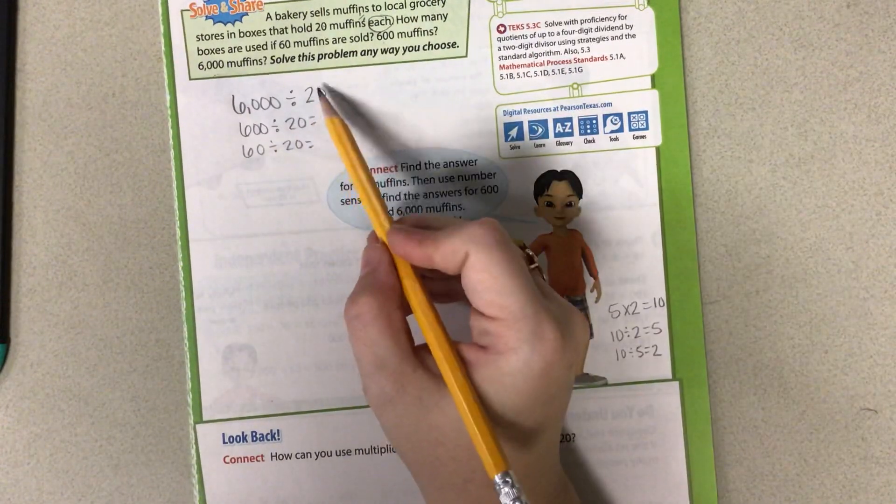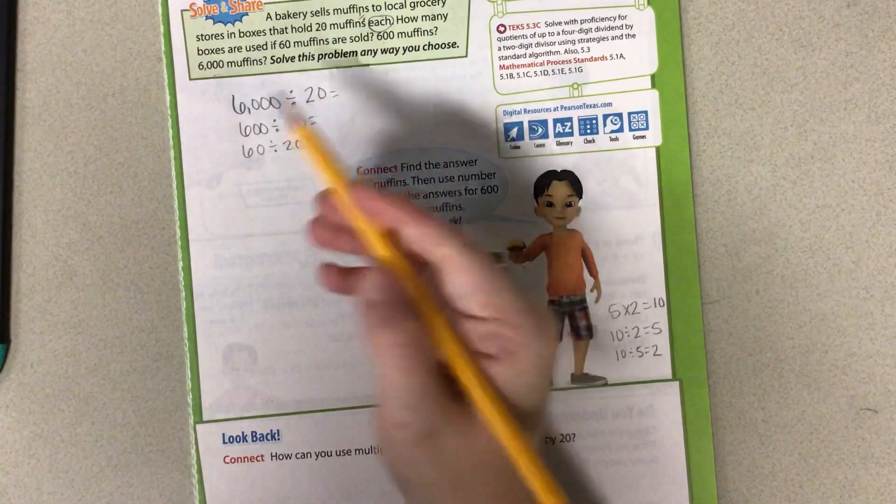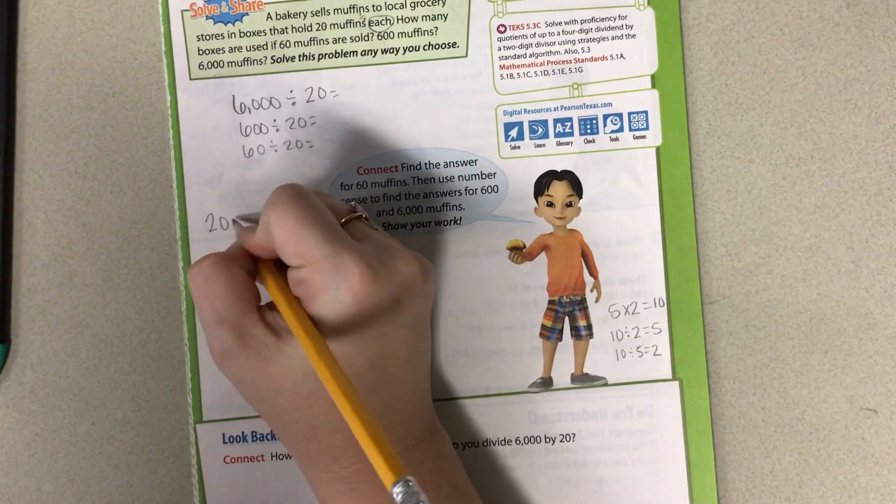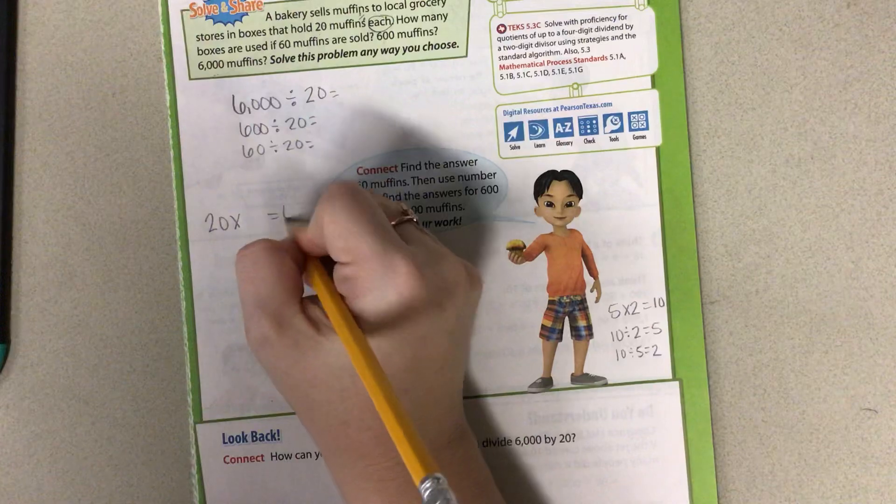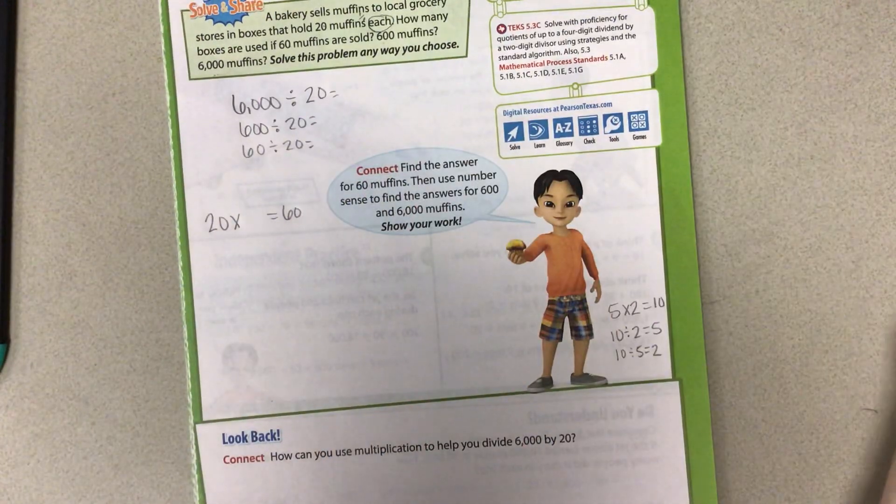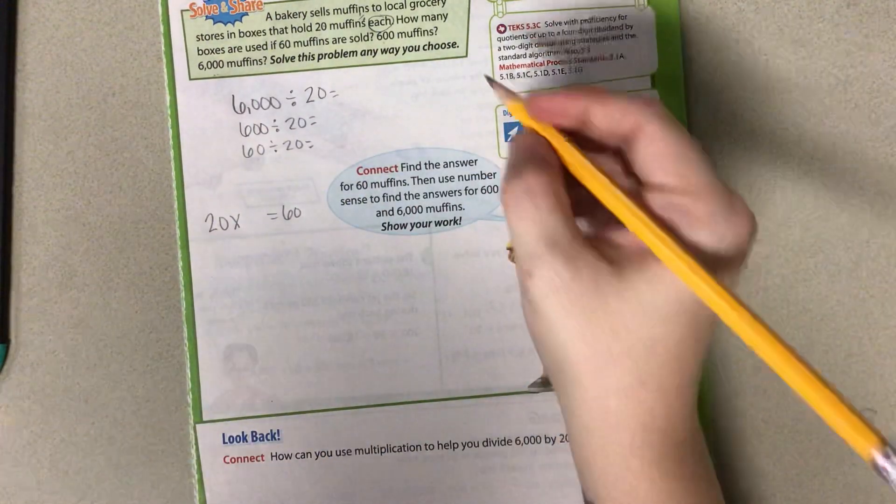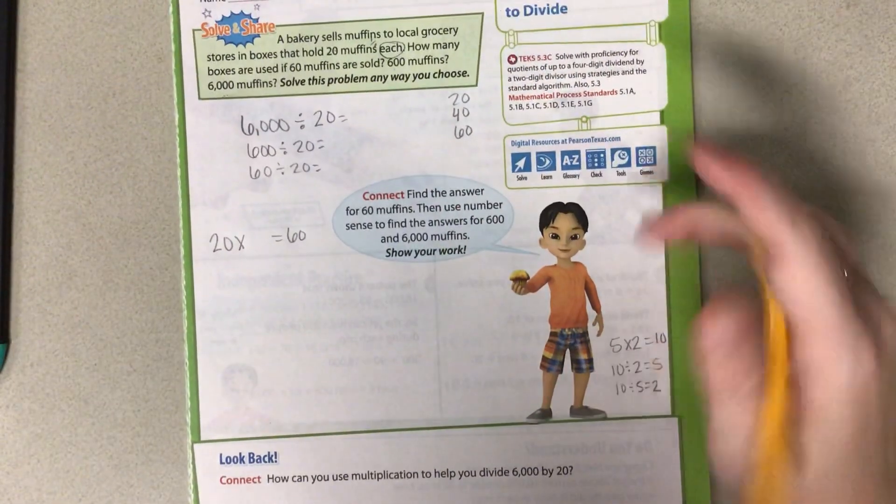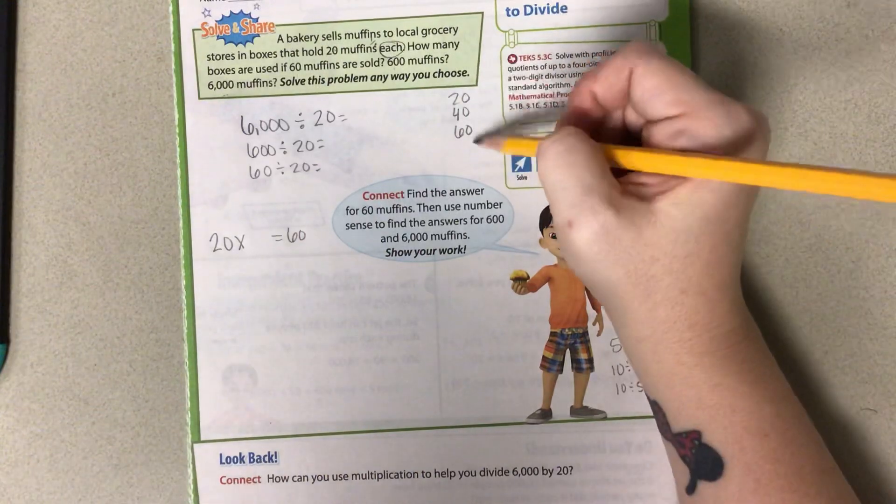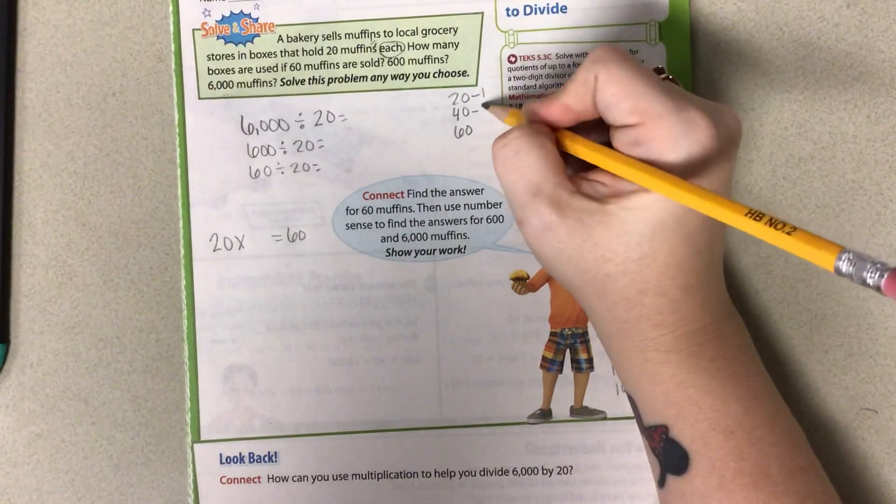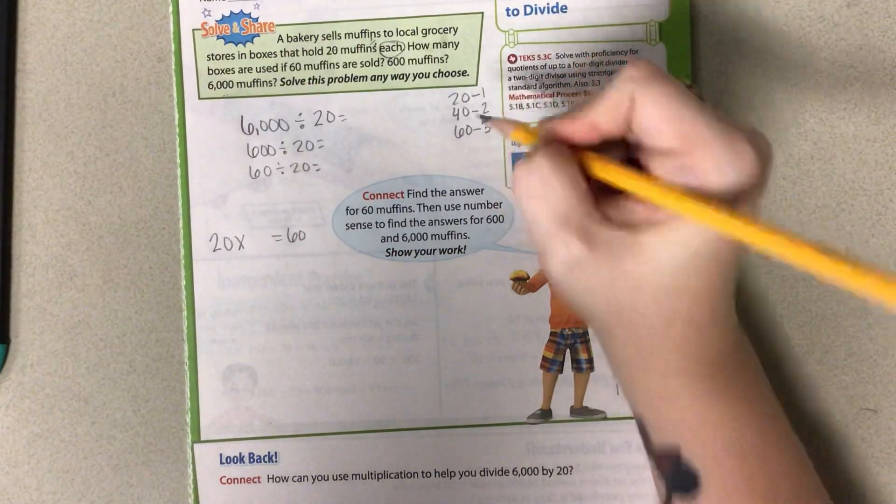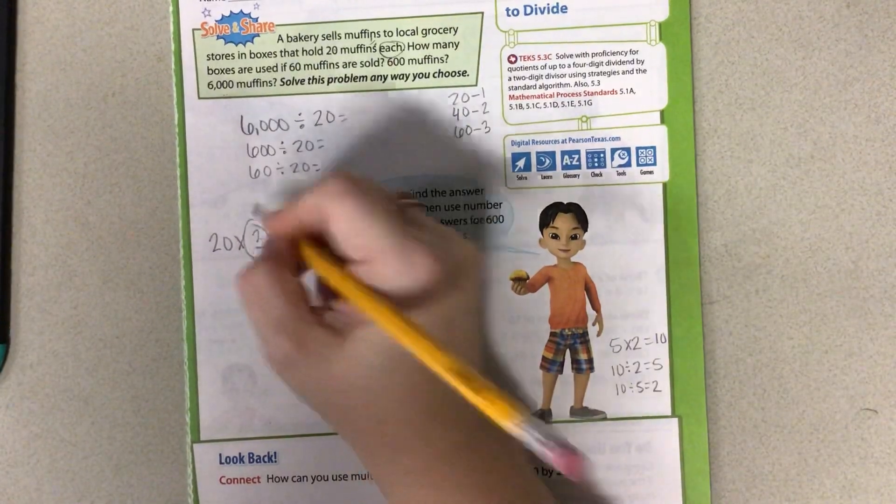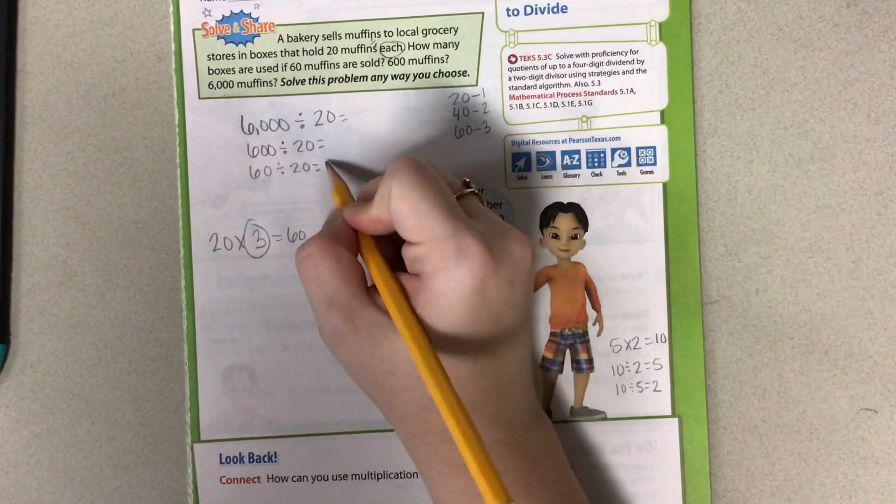If I take 20 and I want to multiply it by a number to get to 60, let's count by 20s. We have 20, 40, 60. This is what we call a power tower because we're putting it in order. This is times 1, this is times 2, and this is times 3. So we know we need 3 boxes to do 60 muffins.